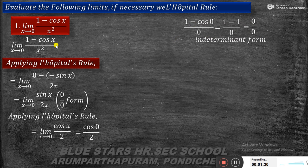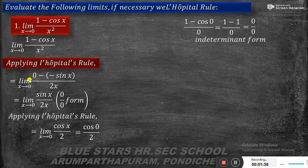Since we obtained the indeterminate form, we apply L'Hôpital's rule. L'Hôpital's rule means we differentiate the numerator and denominator separately. The derivative of (1 minus cos x) is sin x (since derivative of 1 is 0 and derivative of cos x is minus sin x, so minus times minus gives plus sin x). The derivative of x squared is 2x.